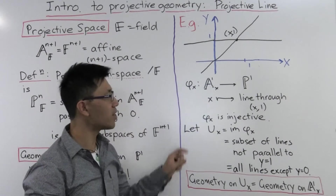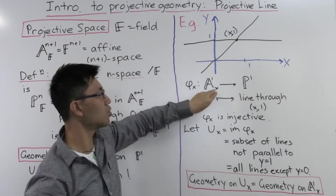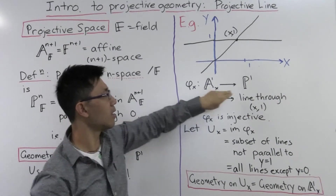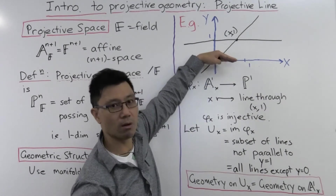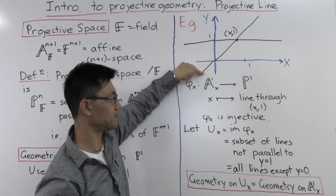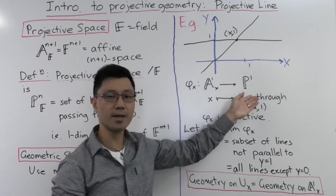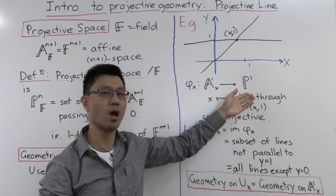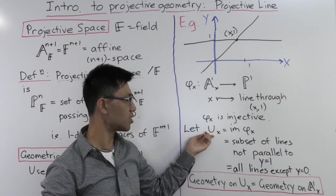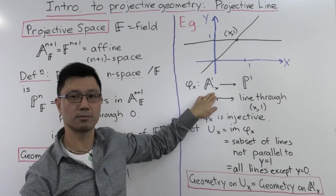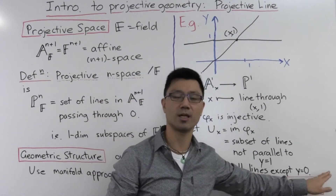If you go back to that video on Bezout's theorem, you might remember that I talked about the projective line as adding a point to the affine line. That's what we see here — P^1 is almost the same as A^1, with an extra point: the point corresponding to the line y equals 0. That's a point at infinity of this line. So that tells you about this part of the projective line, and now we can actually put some geometry there by identifying this subset U_x with A^1.